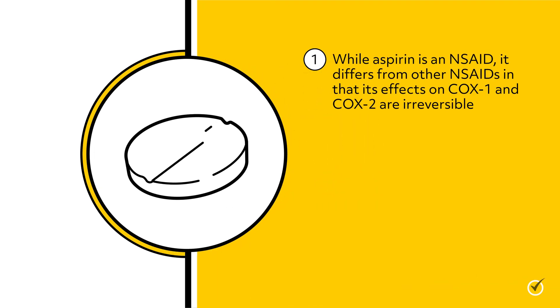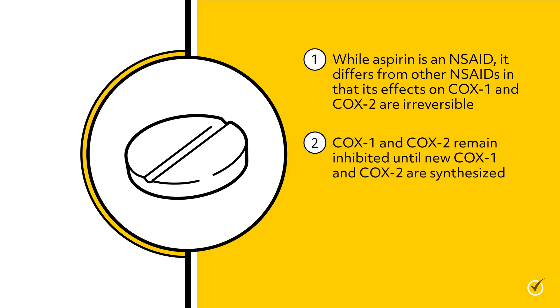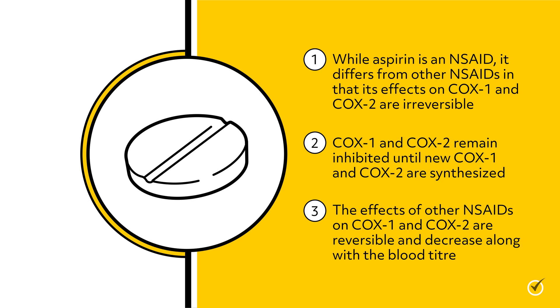A range of NSAIDs is now available in both nonspecific and COX-2 specific formulations, so while one may be ineffective, another may be effective. While aspirin is an NSAID, it differs from other NSAIDs in that its effects on COX-1 and COX-2 are irreversible — COX-1 and COX-2 remain inhibited until new enzymes are synthesized. The effects of other NSAIDs on COX-1 and COX-2 are reversible and decrease along with the blood titer.